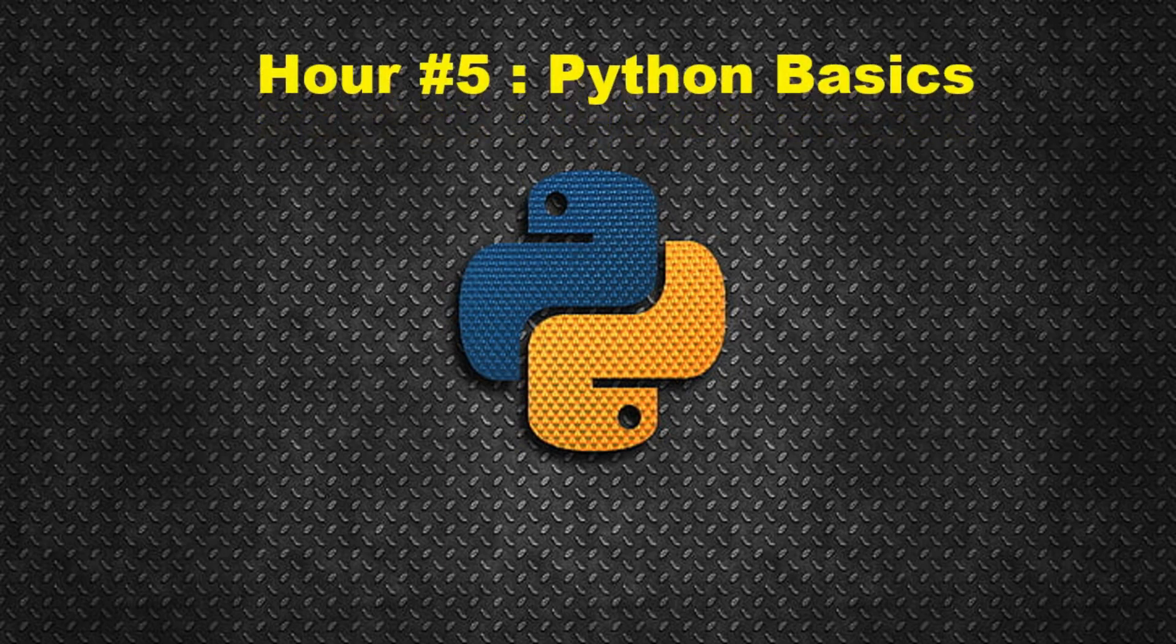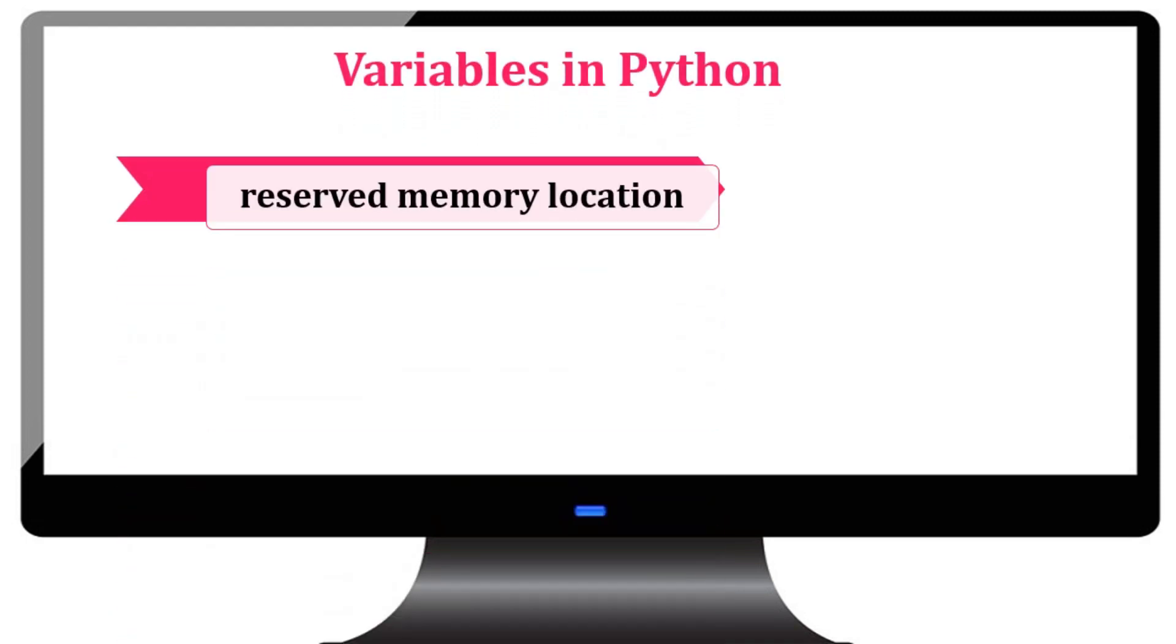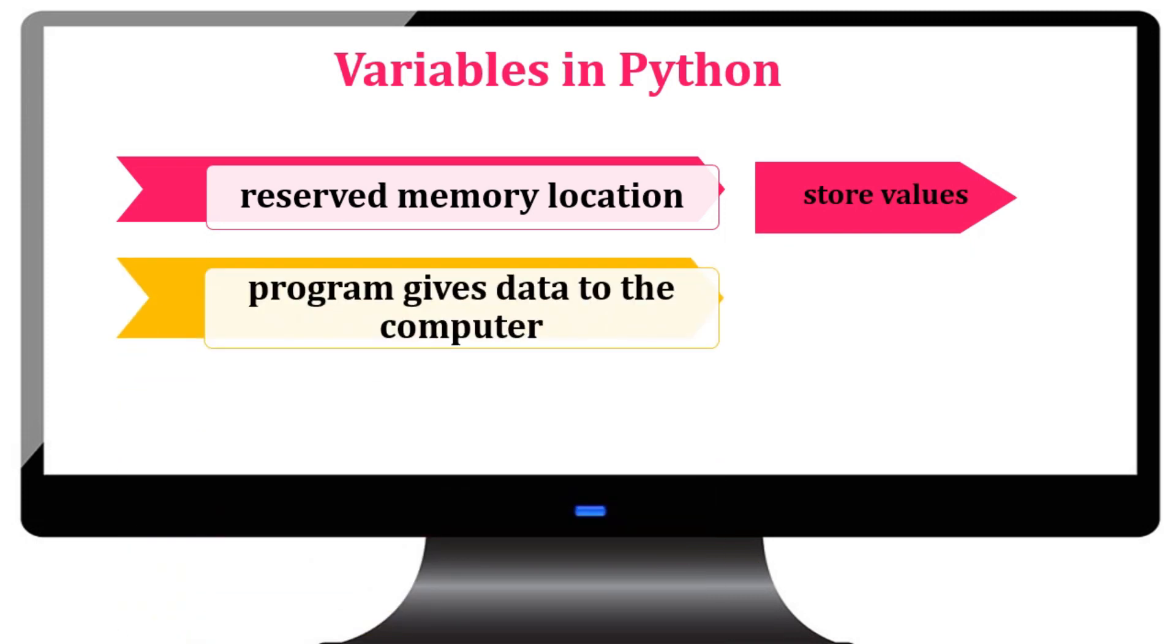In this tutorial, we will be learning about Python variables. A Python variable is a reserved memory location to store values. In other words, a variable in a Python program gives data to the computer for processing.